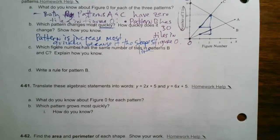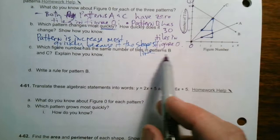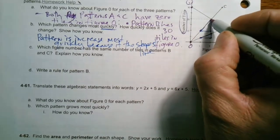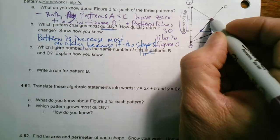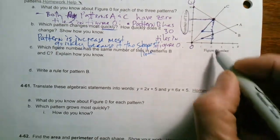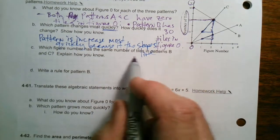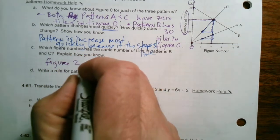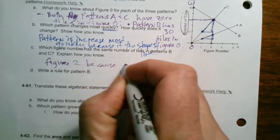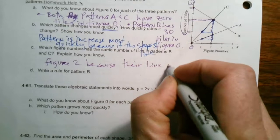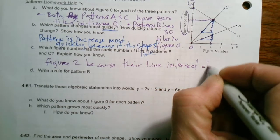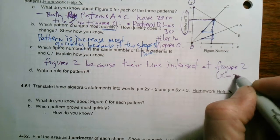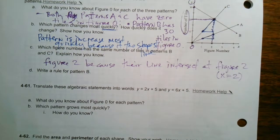So then part C says, which figure number has the same number of tiles in pattern B and C? So if I look, pattern B and C, here's pattern C, and here's pattern B, and they cross right there. So that tells you they have the same number of tiles at figure two. So which figure number has the same number of tiles? It'd be figure two. And explain how you know, because their lines intersect at figure two, or we could say at X equals two. So at X equals two, that's where the lines intersect.